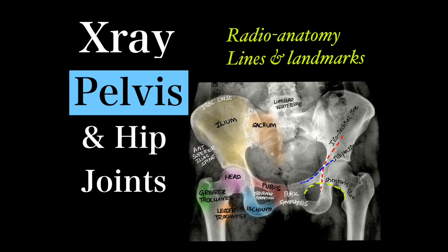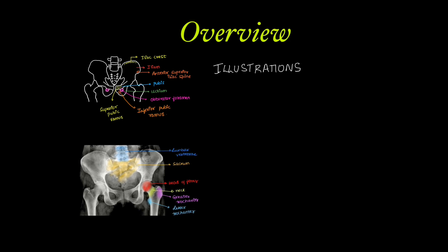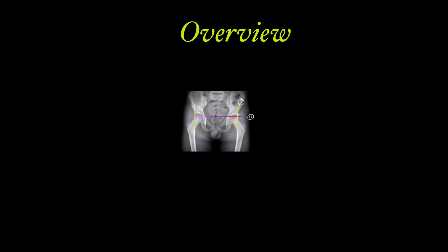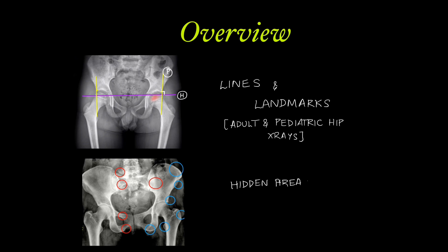We will see in detail about x-ray pelvis — the radiographic views, anatomy, and lines and landmarks which are very important while reporting x-rays in this video. We will first see illustrations of how to draw a pelvis and its parts, then the radiographic views and anatomy, and then important lines and landmarks used in adult and pediatric hip x-rays. We will also see some hidden areas where subtle fractures can be missed.